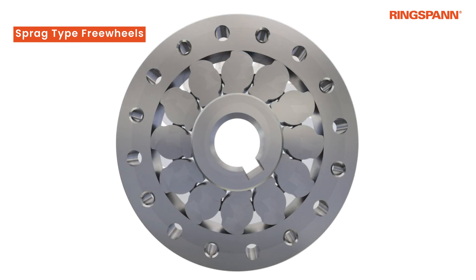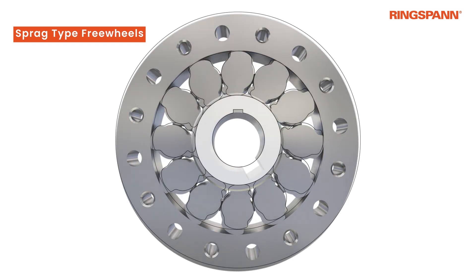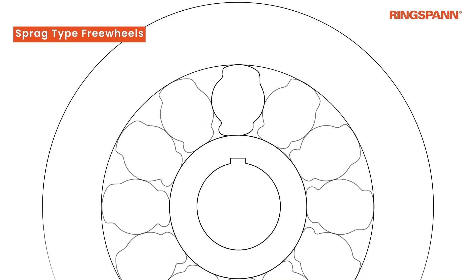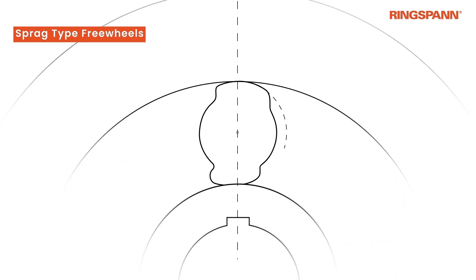In reality, the shape of the Spragues is a little more complex. The shape of an actual Sprague is a combination of multiple radii with different centre points. The deviation of these radii forms a clamping wedge that is responsible for the clamping effect.